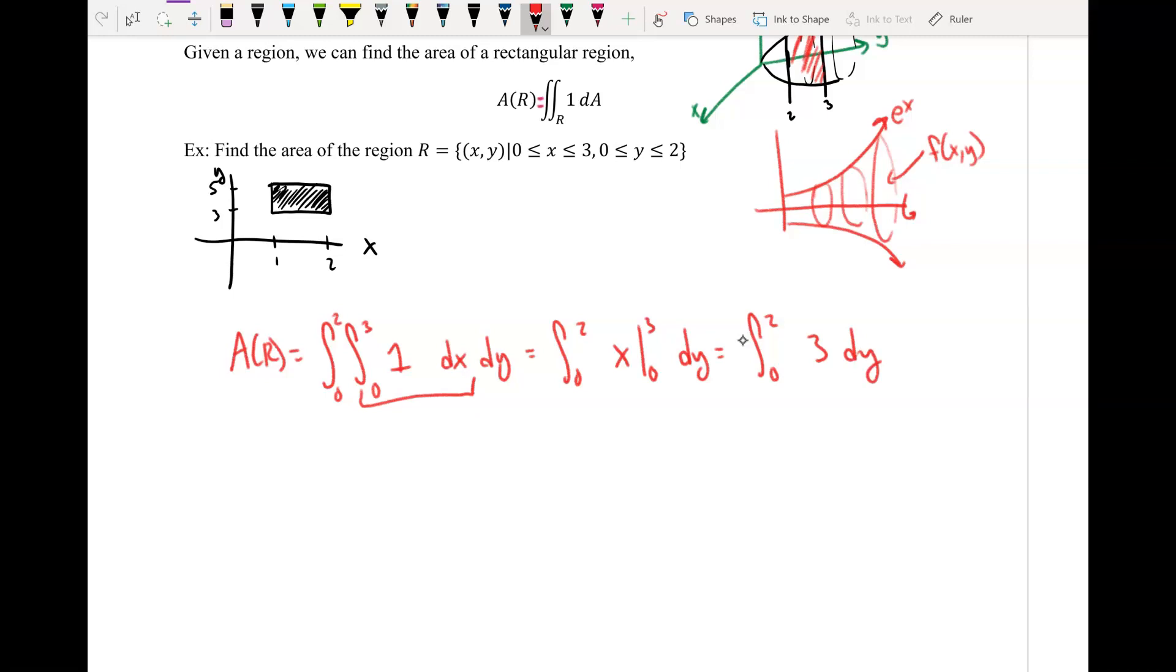And now all we're really going to do is just take the integral of this. So you're going to get 3y, and this is going to be from 0 to 2. 3 times 2, which gives me 6.